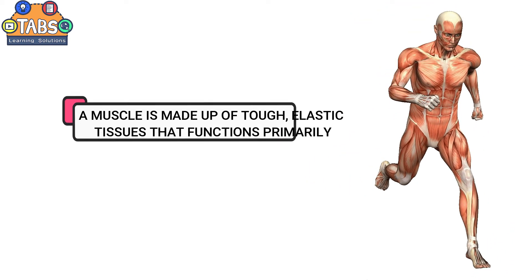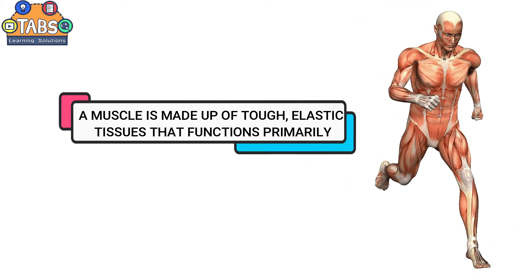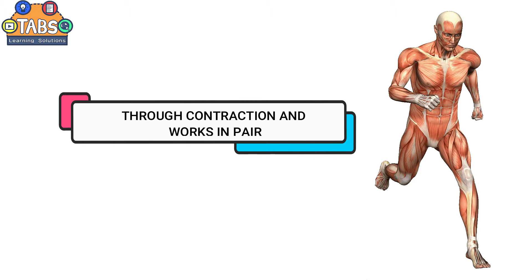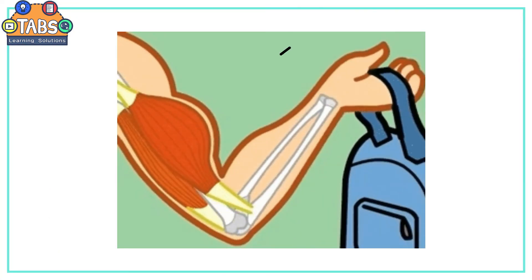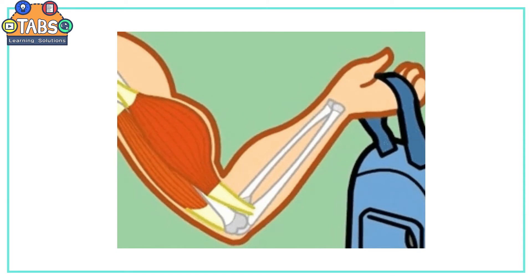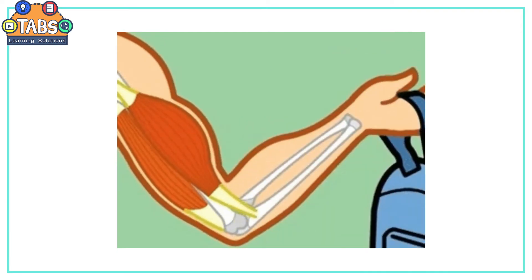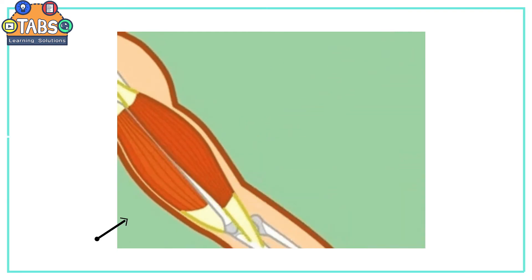A muscle is made up of tough, elastic tissues that functions primarily through contraction and works in pairs. The muscle that contracts to cause a joint to bend is called the flexor. The muscle that contracts to cause the joint to straighten is called the extensor.